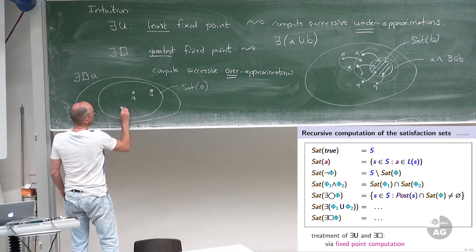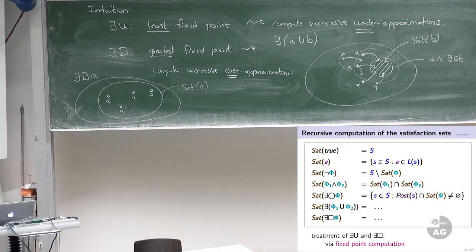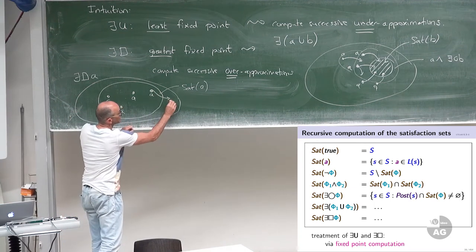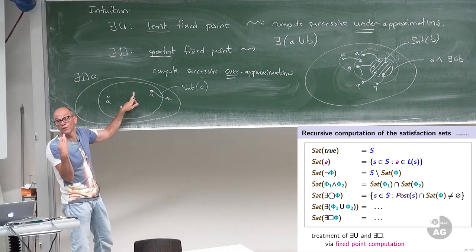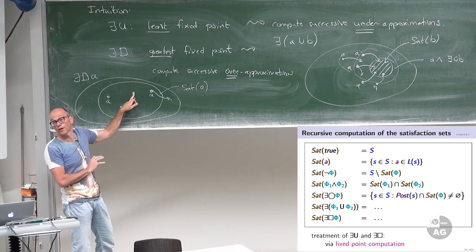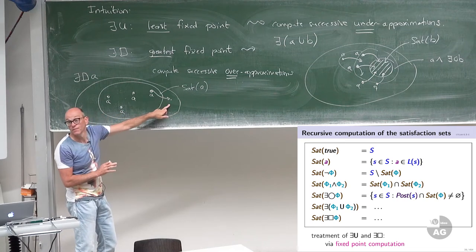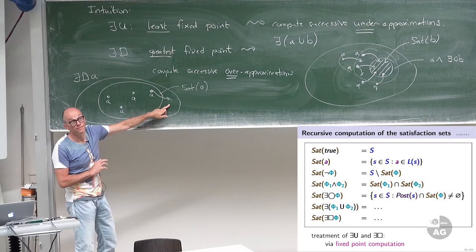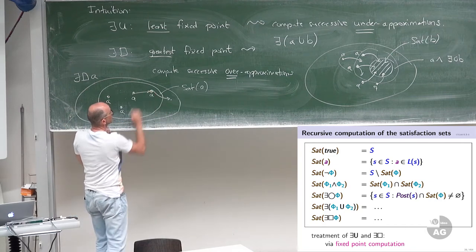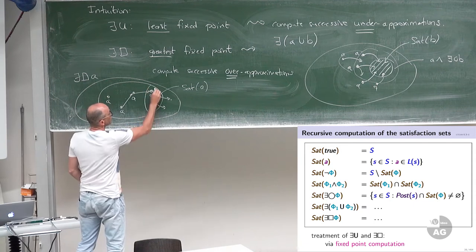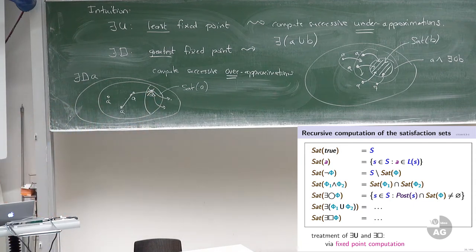This is a fixed-point equation — the formula on the left occurs in the same shape on the right. The set we are looking for is a fixed-point of a higher-order function omega that maps sets of states to sets of states. This function applied to T gives you: set phi2 union all phi1 states that have at least one successor into T. This function may have several fixed points. The fixed-point we are interested in is the least fixed-point — the smallest set satisfying this equation.